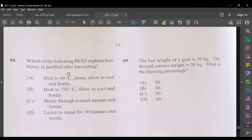Which of the following best explain how honey is purified after harvesting? The most suitable answer here would be A, where you heat to 80 degrees Celsius, strain, and allow it to cool.